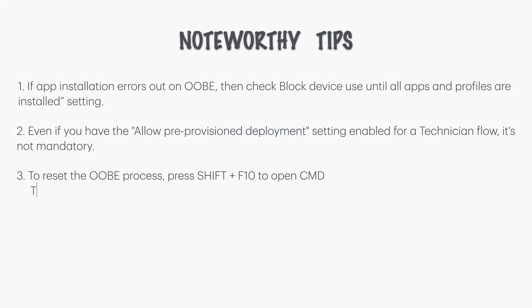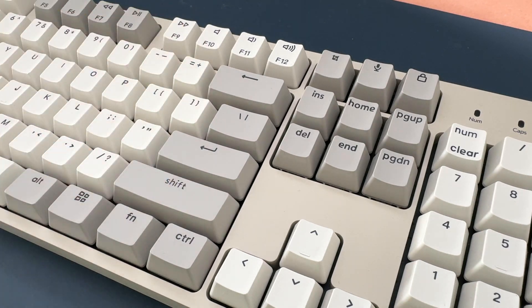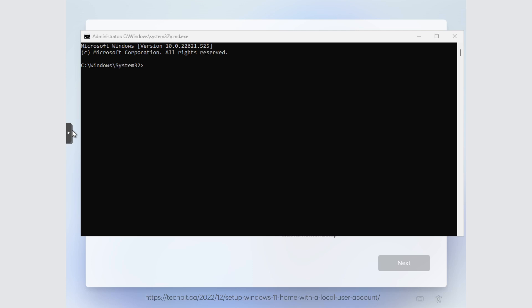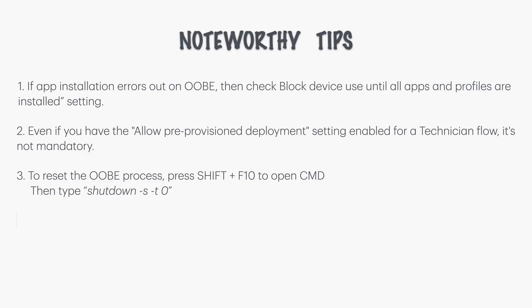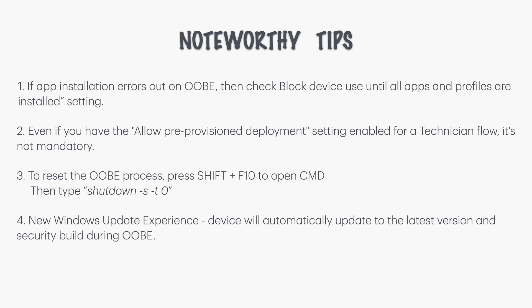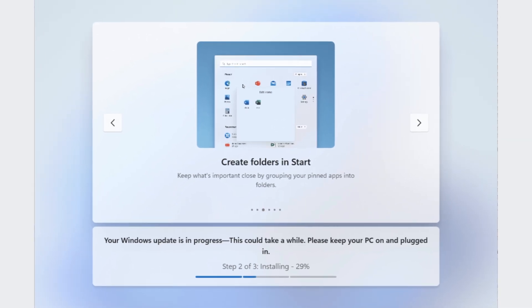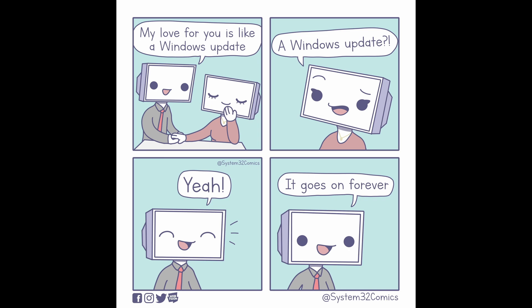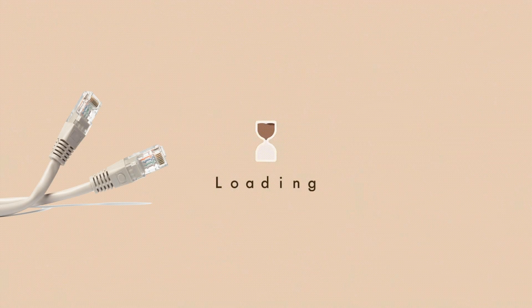Tip three: if you didn't see your company branding for the user sign-in and need to reset the OOBE process, simply press Shift + F10 on your keyboard to open up the command prompt, then type in the command that you see here on the screen — this will take you back to the region and language screen. Tip four: this is more of an FYI about a recent rollout from Microsoft of their new Windows update experience, which means the device will automatically be updated to the latest version and security build during OOBE, which also means the OOBE process is now going to be a bit longer — or a lot longer — depending on your connection because of the updates.